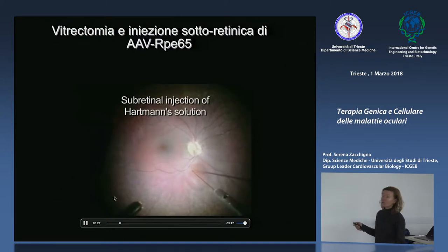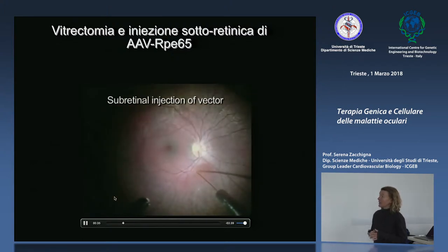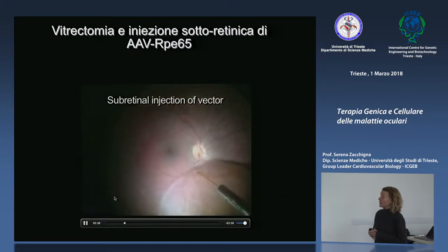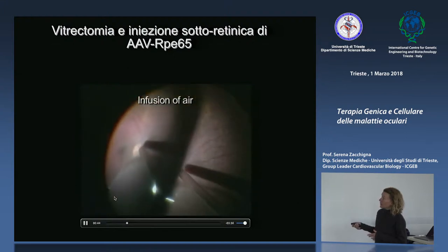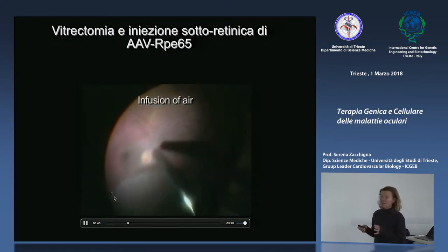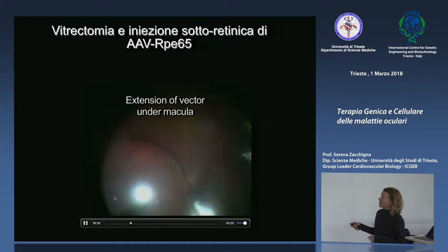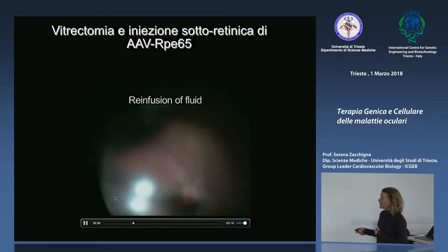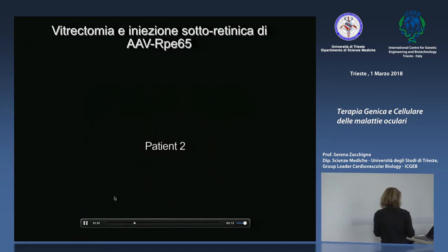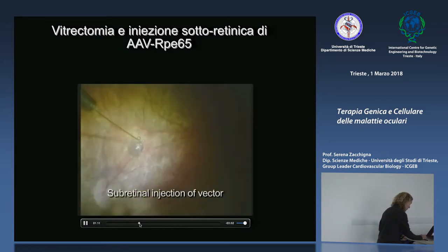La procedura prevede di iniettare una soluzione sottoretinica per creare spazio nello spazio sottoretinico prima di iniettare il vettore, poi si infonde aria per favorire la dispersione del vettore osservando l'estensione a livello della macula, la zona che più interessa per recuperare la visione centrale, e infine si infonde il fluido. La procedura viene eseguita tramite vitrectomia con peeling della membrana ialoidea posteriore.